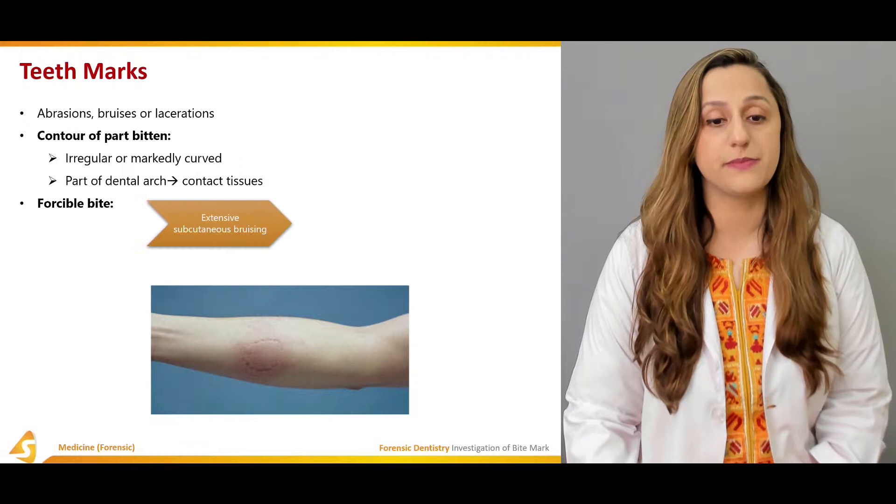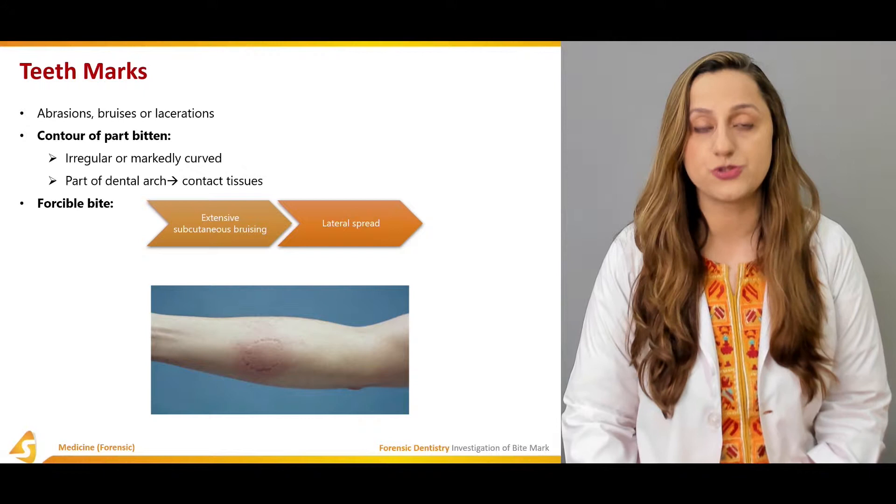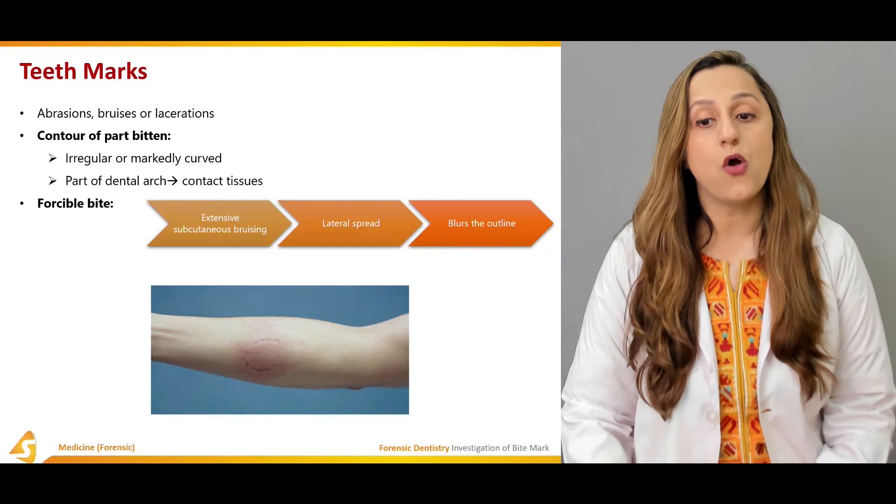If it's a forcible bite, extensive subcutaneous bruising will be documented in the autopsy report. If there's lateral spread or a fading outline found in a particular case, it indicates that it was a forcible bite.